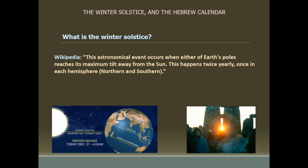This astronomical event occurs when either of Earth's poles reaches its maximum tilt away from the sun. When it's the southern hemisphere that's tilted, as you see in that photograph, that is the winter solstice — the shortest day of the year and the longest night. This happens twice yearly, in the summer and winter, once in each hemisphere. We are in the midst of winter, while for people living in Australia and other areas of the world, it's summertime.